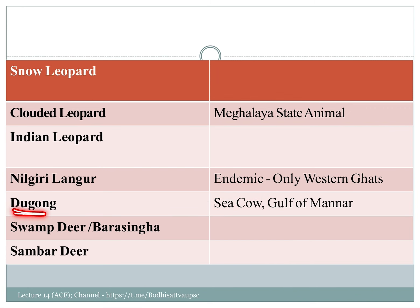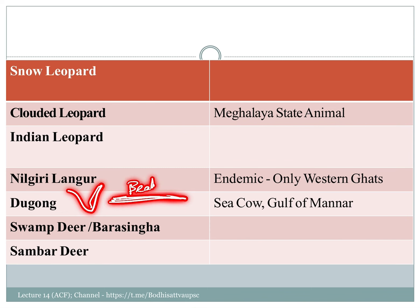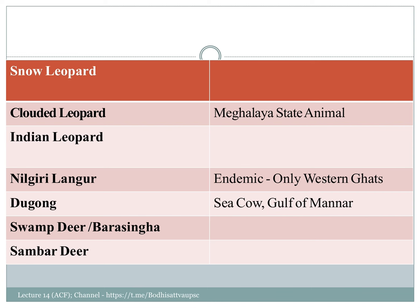The sea cow is vegetarian. It is found on the continental shelf where sunlight reaches and seagrass grows. Because there is sunlight and grass on the continental shelf, the ecosystem supports the Dugong. The swamp deer and barasingha are also in the vulnerable category.